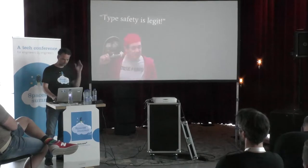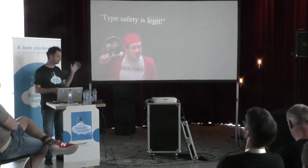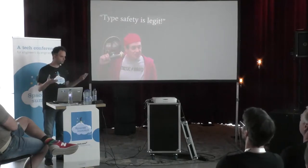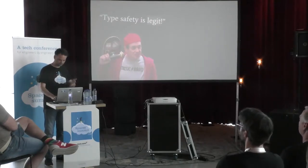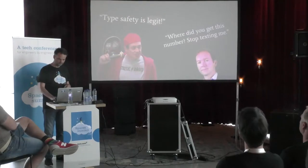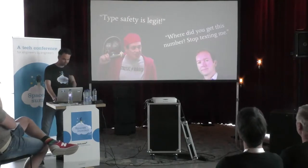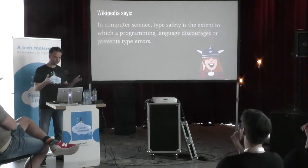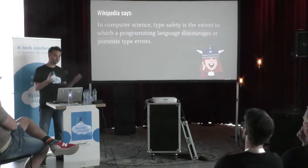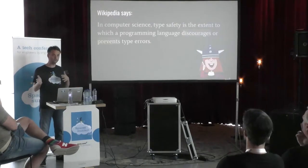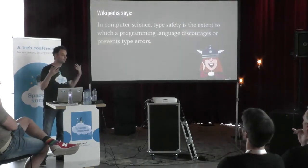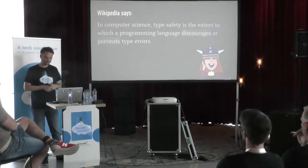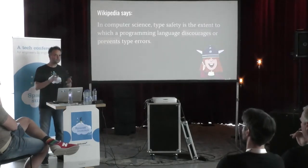If you go to the man on the street, they probably have some kind of opinion. They think type safety is good, but they cannot really tell you why. Wikipedia also has an opinion. They say: in computer science, type safety is the extent to which a programming language discourages or prevents type errors. It's really nice, but then you need to know what a type error is, and that's not really explained there, so it's still quite vague.